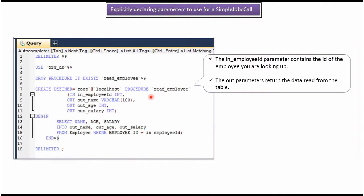Here you can see the stored procedure. The stored procedure name is read_employee. I have defined input parameters and output parameters. Based on the input parameter employee id, it will get name, age, and salary values from the employee table, and those values will be assigned to the output parameters. We will see how to create this stored procedure and how to call it using SimpleJdbcCall.